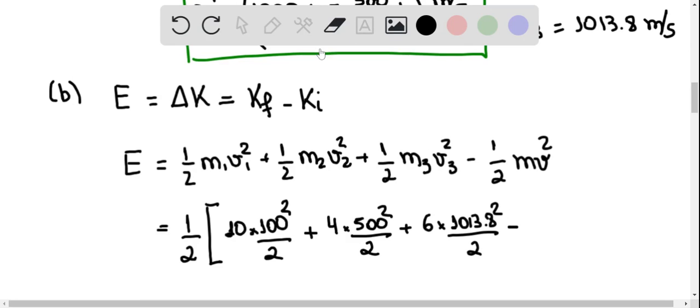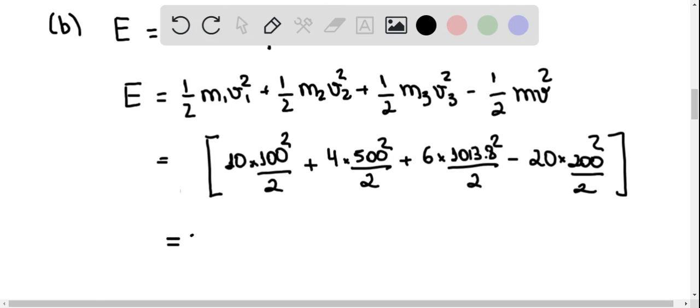Actually, I'm sorry. I've been dividing things by 2, so I shouldn't have this 1 half term in front. I'm sorry for that. Minus 20 times 200 meters per second squared divided by 2. And the answer is 3.23 times 10 to the 6th Joules. And this concludes our exercise.